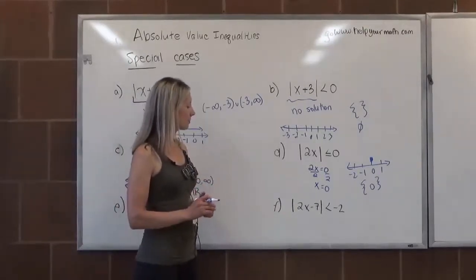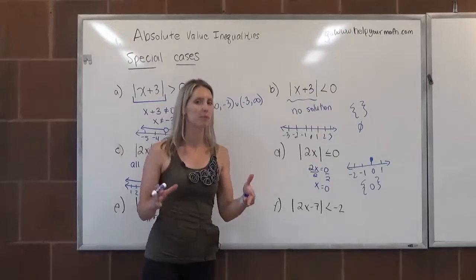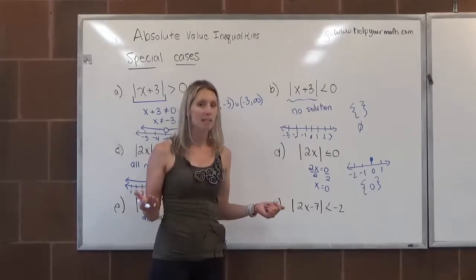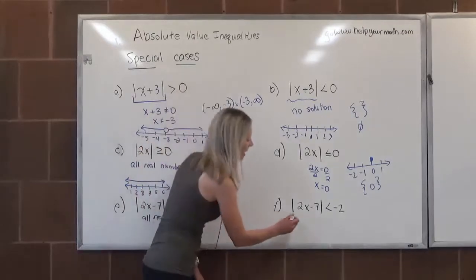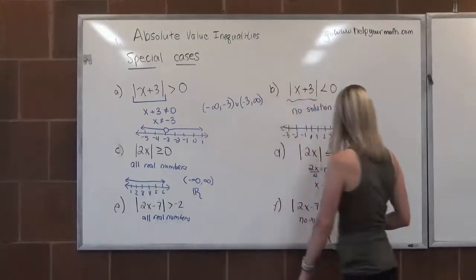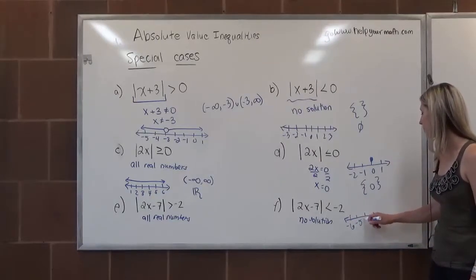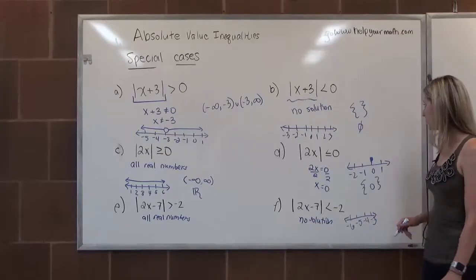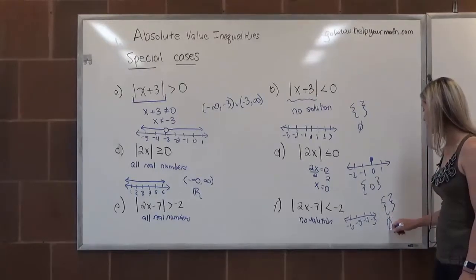Last but not least, we have the absolute value of something less than negative 2. When is it possible that we take an absolute value and that number is smaller than negative 2? It's impossible — it's a contradiction of the definition of absolute value. So this one would have no solution. On a number line, we would just have an empty number line. In interval notation, you can either do the braces with nothing inside or use the null set.